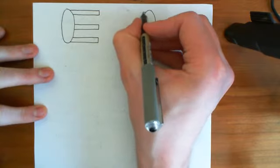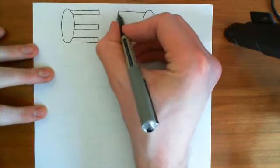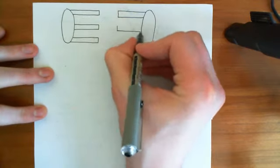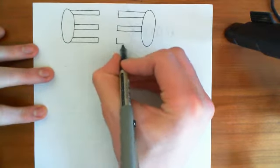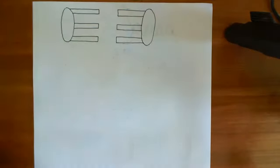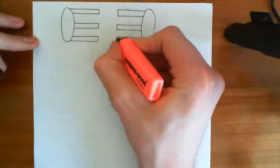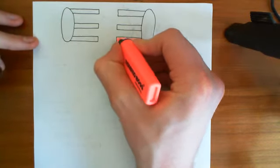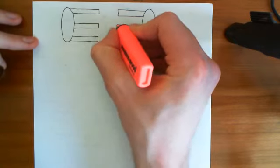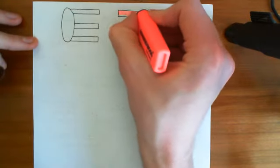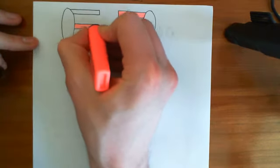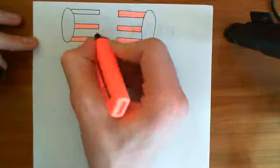From this one over here you then have actin filaments projecting the other way towards the other dense body, like so. I'm just showing three of these actin filaments, but of course in reality you'll have far more than that. I'll colour them in red. And in between the actin filaments you then have myosin filaments, which are slightly larger than the actin filaments. The actin filaments are generally around one micrometre long, whereas the myosin filaments are slightly larger than that.